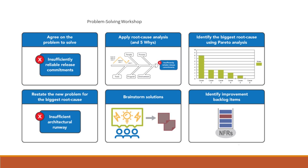This takes us on to section three of the Inspect and ADAPT, which is the problem solving workshop. Here you see six steps in the problem solving workshop, starting off with agreeing the problem to solve right down to identifying improvements for the backlog items. We're going to take you through each of these one at a time and let you see how it all hangs together.